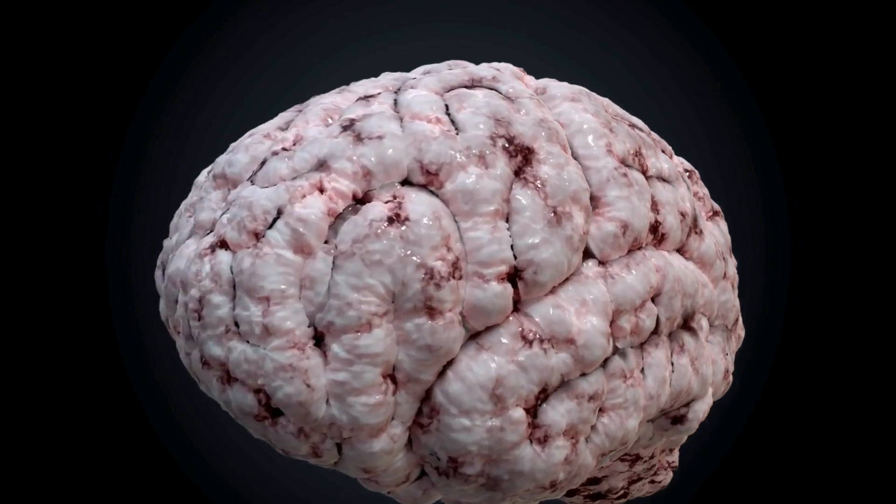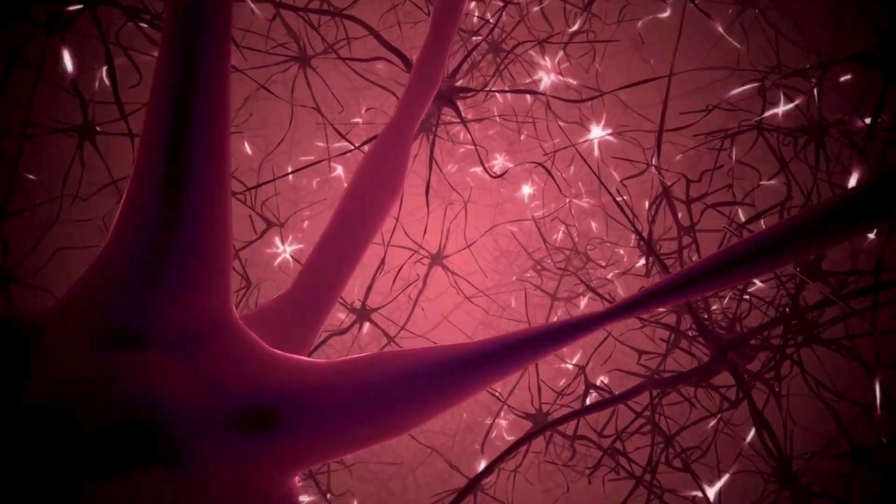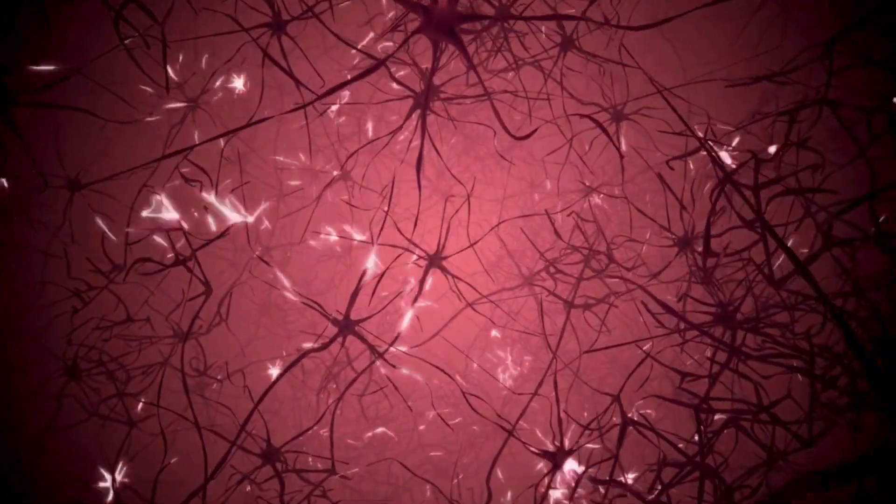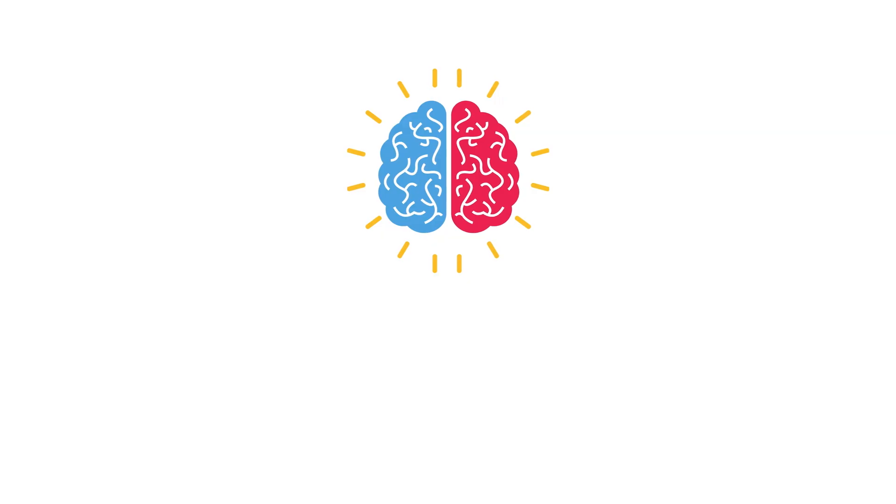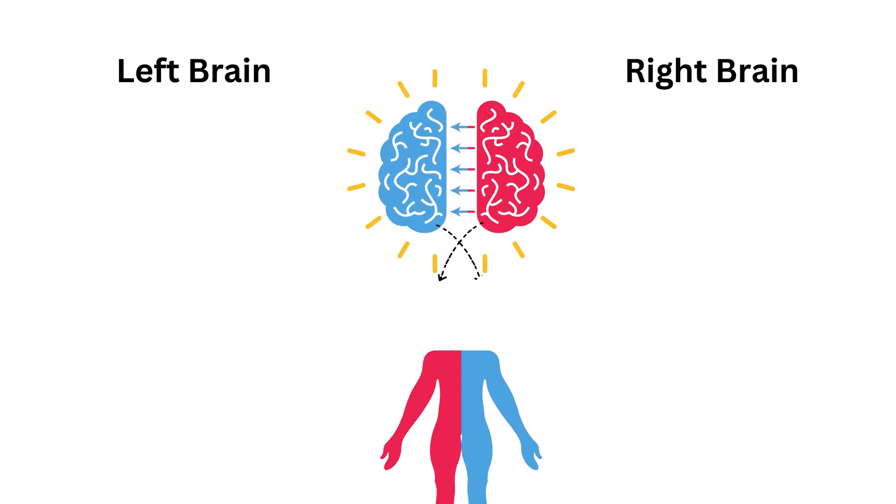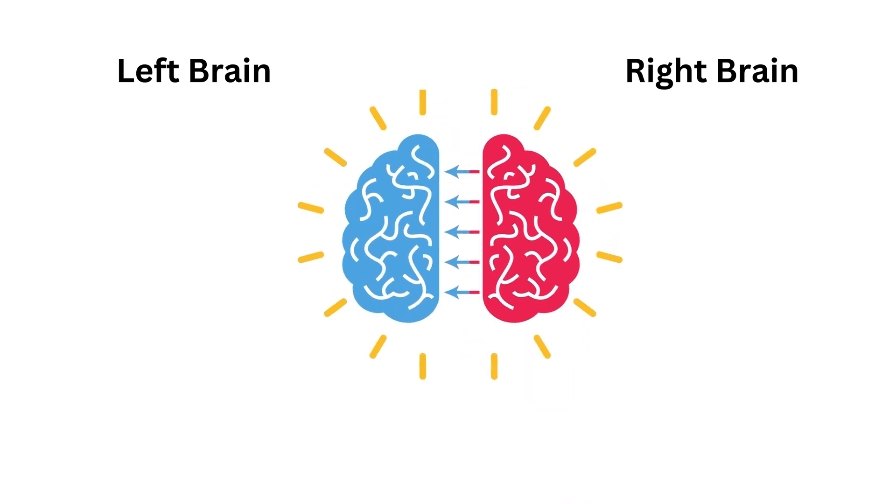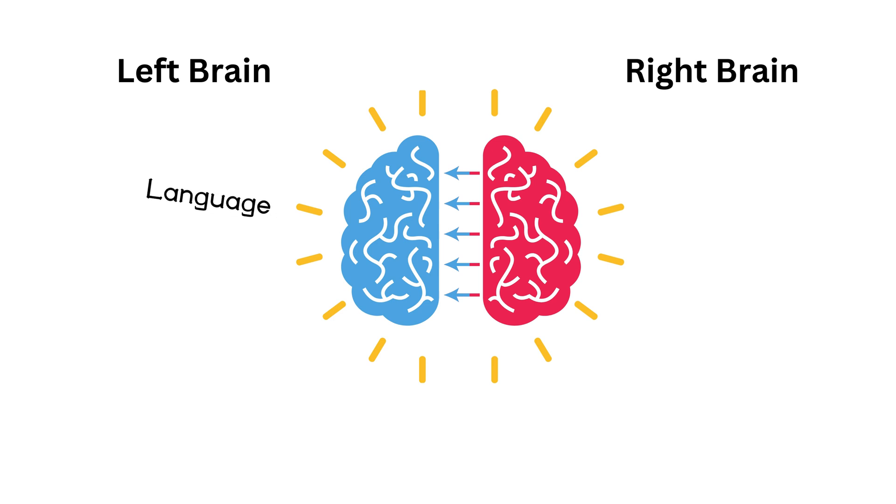The human brain is an incredibly intricate organ, comprising billions of neurons and countless connections. It's responsible for everything we think, feel, and do. The brain is divided into two hemispheres, known as the left and right hemispheres. Each hemisphere controls the opposite side of the body and is associated with different functions. The left hemisphere is often considered the seat of language and logical reasoning, while the right hemisphere is associated with creativity and spatial awareness.